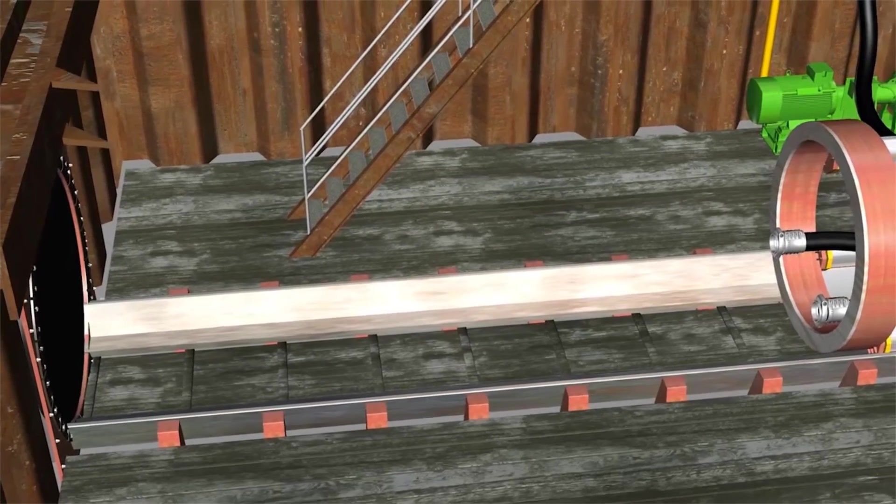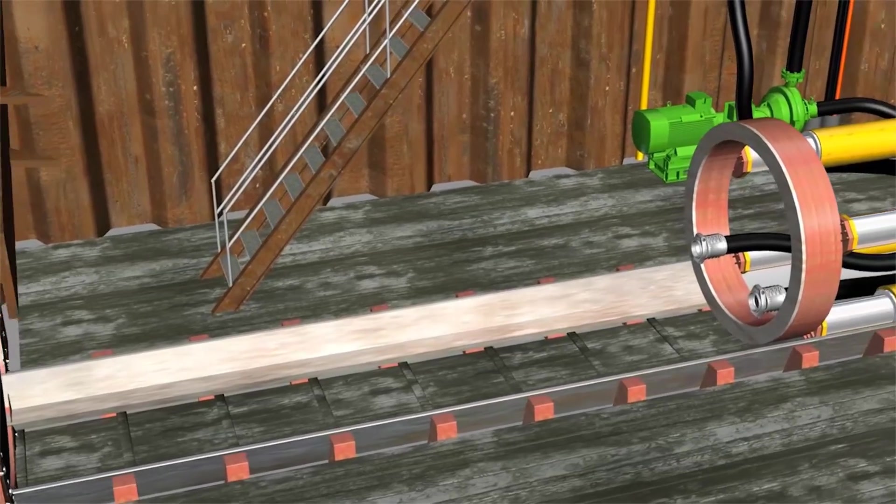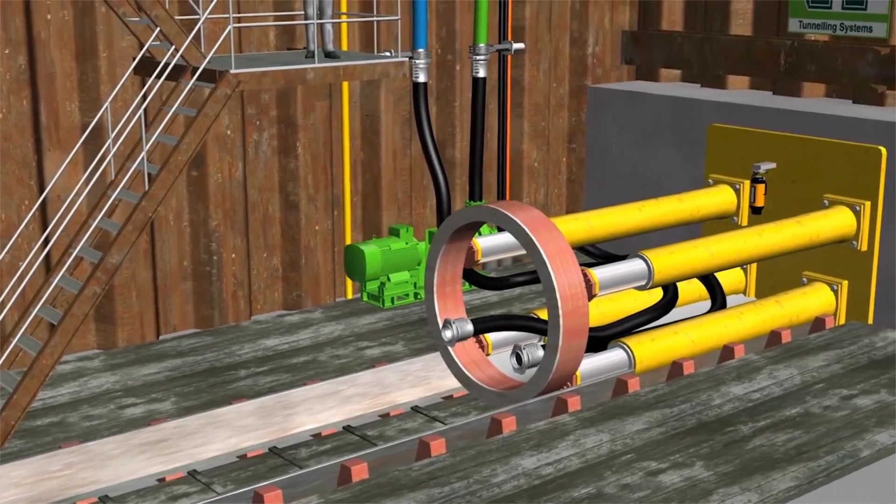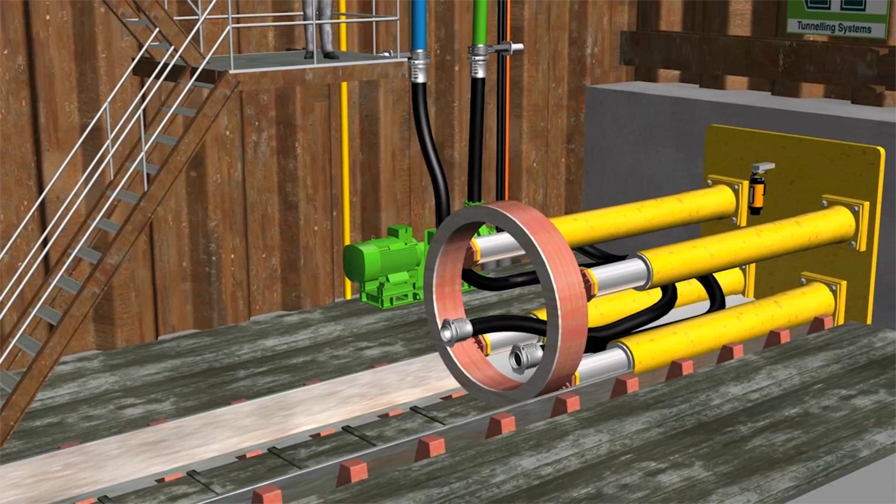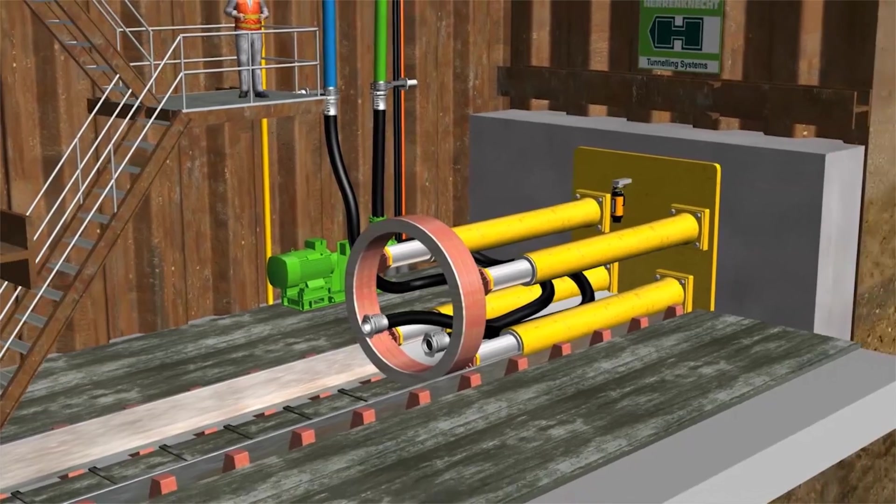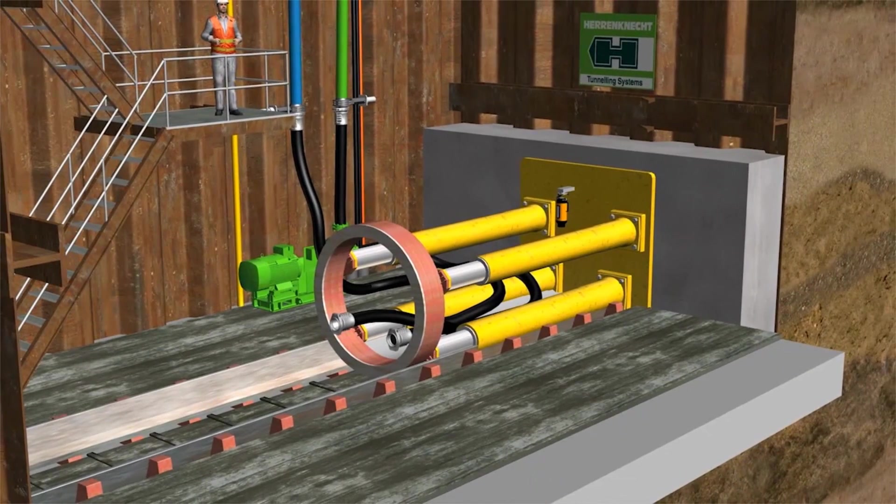The push rails for the main jacking station are assembled in the tunnel axis. These push rails serve to exactly position and guide the machine and jacking pipes. A concrete block is cast on the back of the shaft, which transfers the force of the main jacking station to the shaft wall.